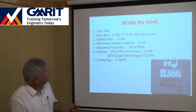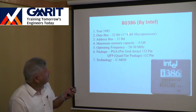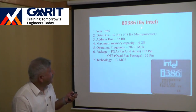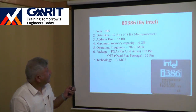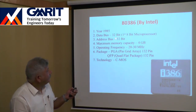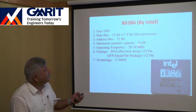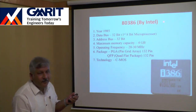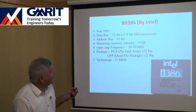The 80386 also increased the address bus from 24-bit to 32-bit. With a 32-bit address bus, the maximum memory capacity is 4 GB. The operating frequency was 20 to 30 MHz.